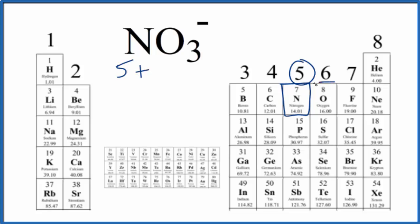Oxygen right next to it, group 16, sometimes called 6A, six valence electrons. We do have three of these oxygens, so let's multiply that by three.